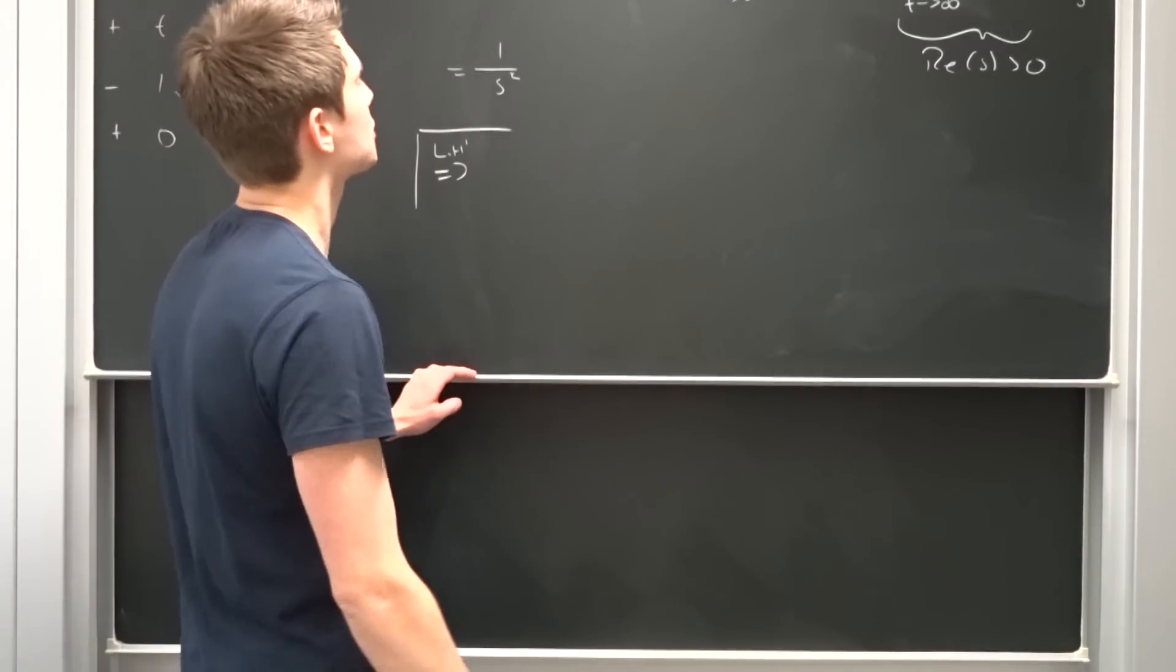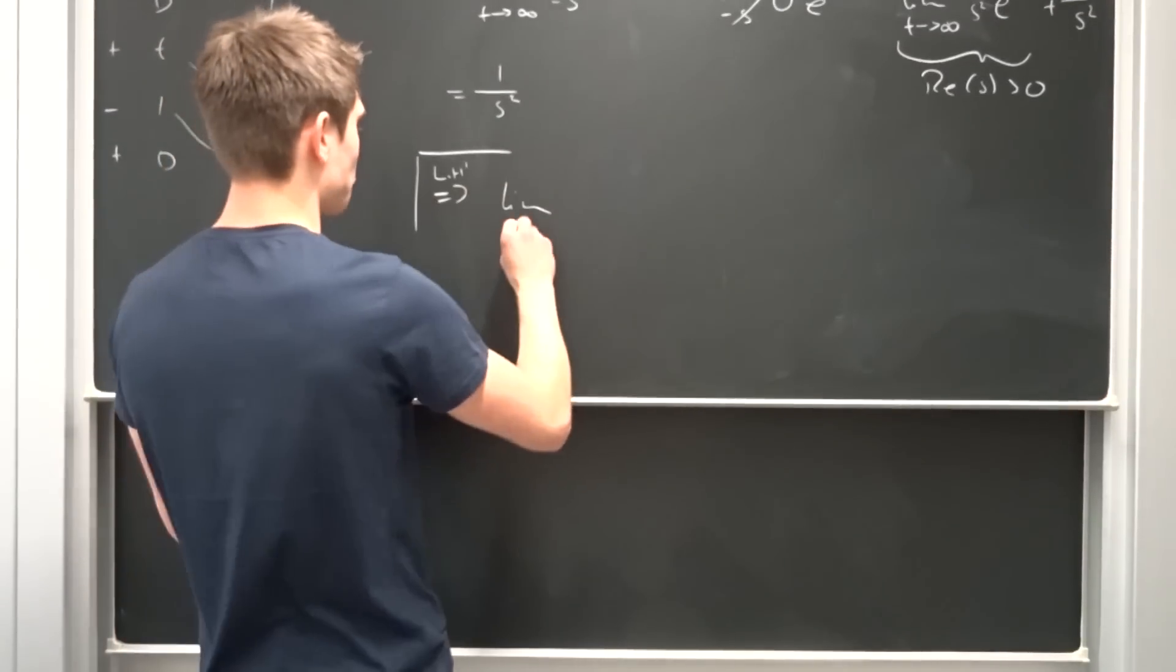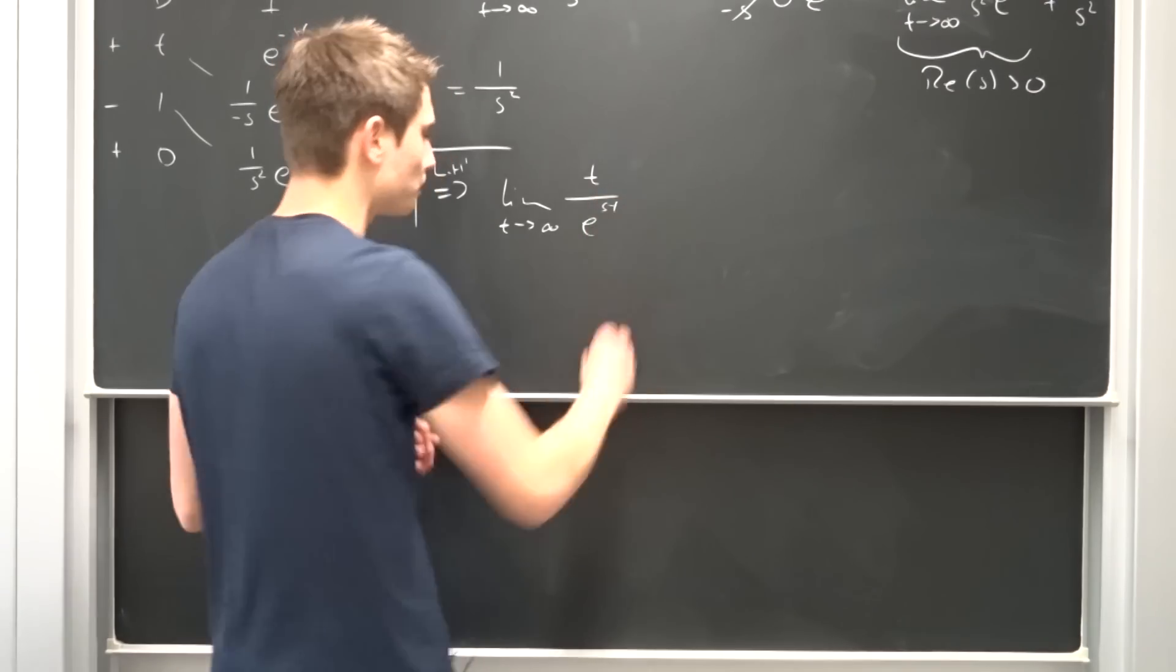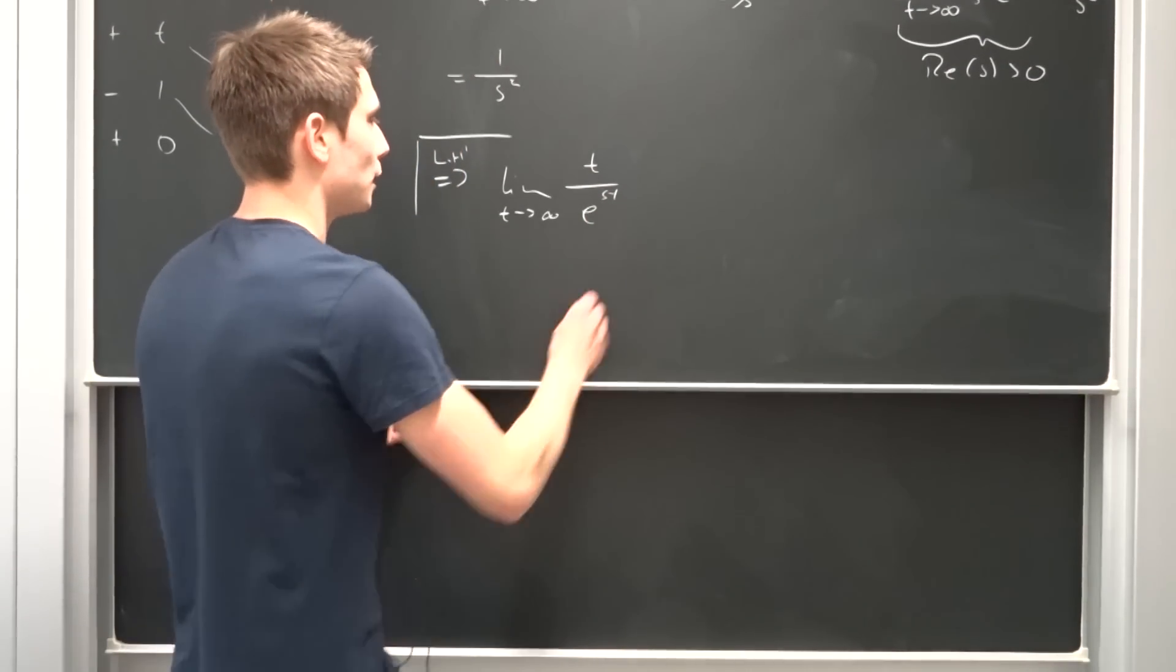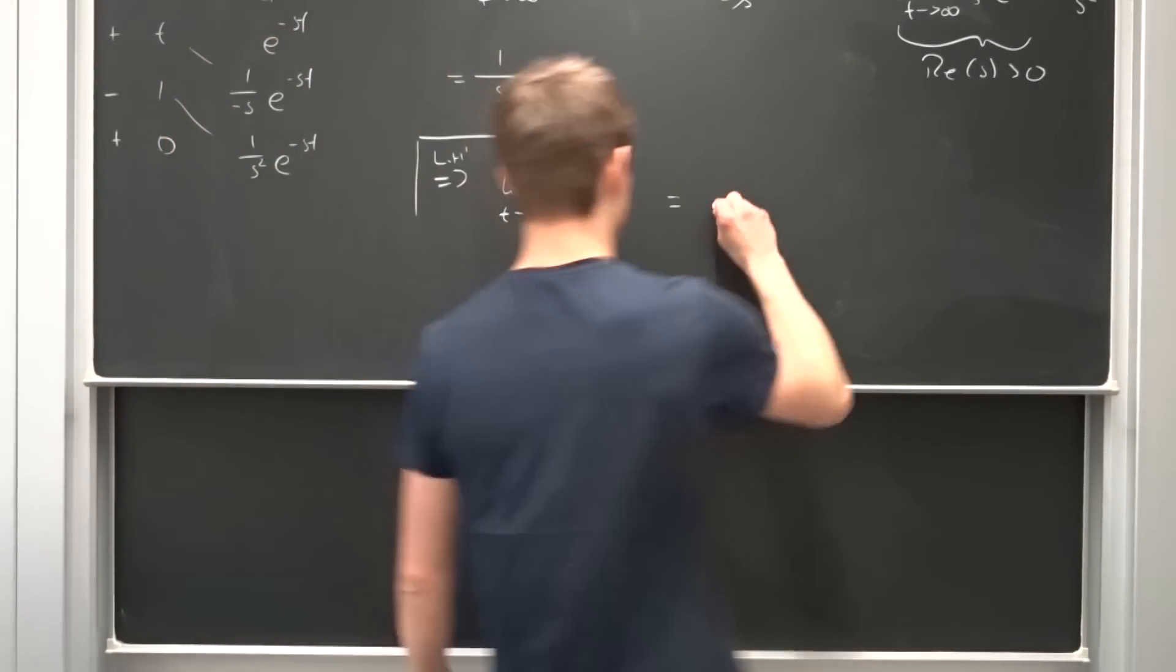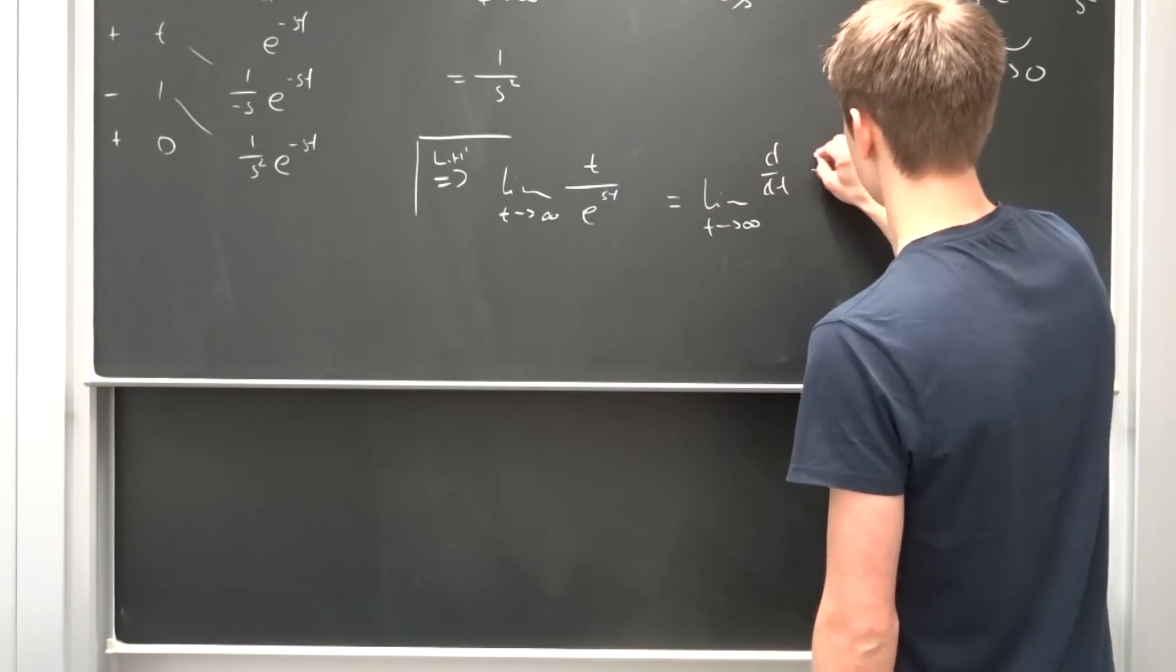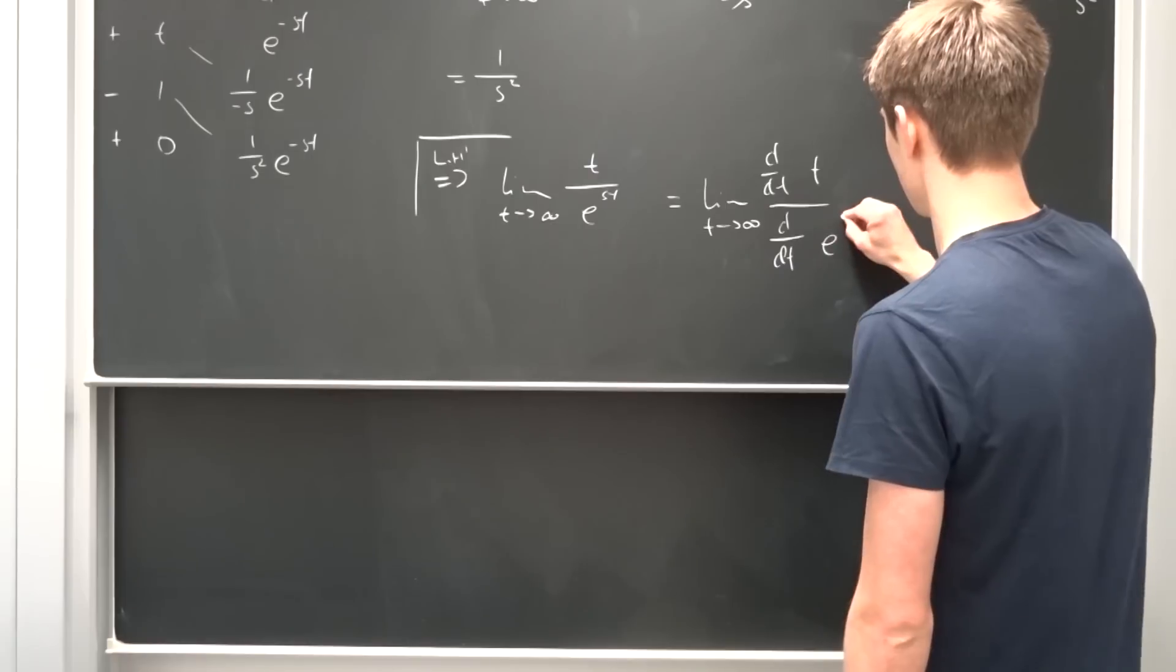Okay, so we need to apply it. So let's leave this constant out of the way. Limit as t approaches infinity of t over e to the st. Okay, so what do we need to do now? Well we need to differentiate the numerator and the denominator. So that's the limit as t approaches infinity of d dt times t over d dt e to the st.